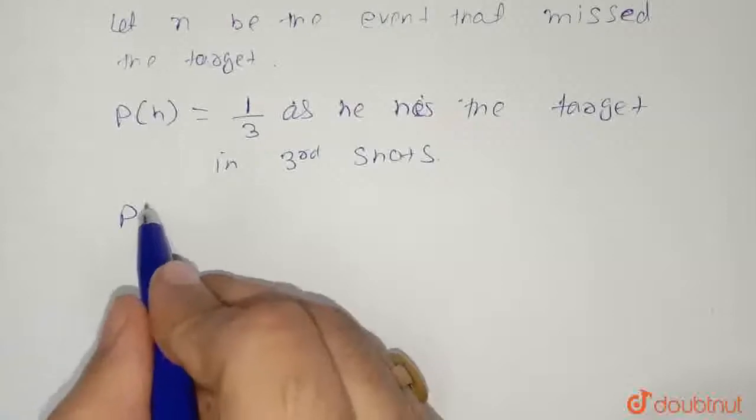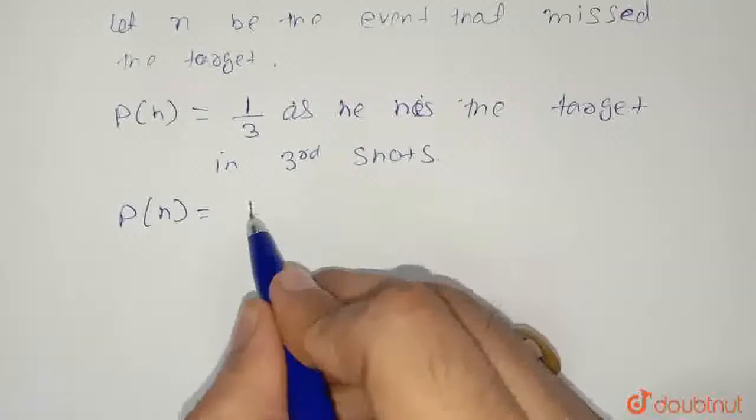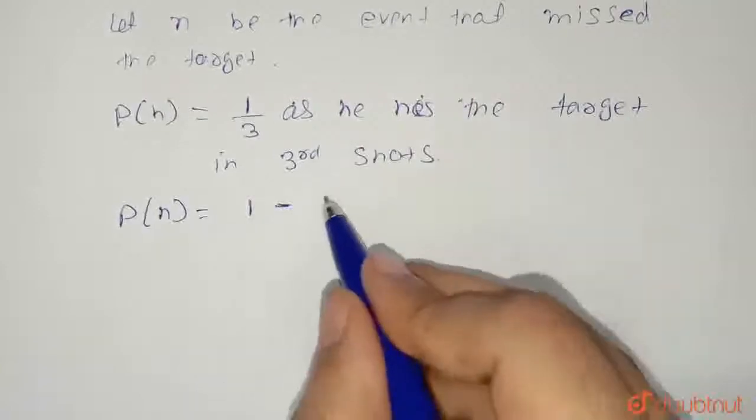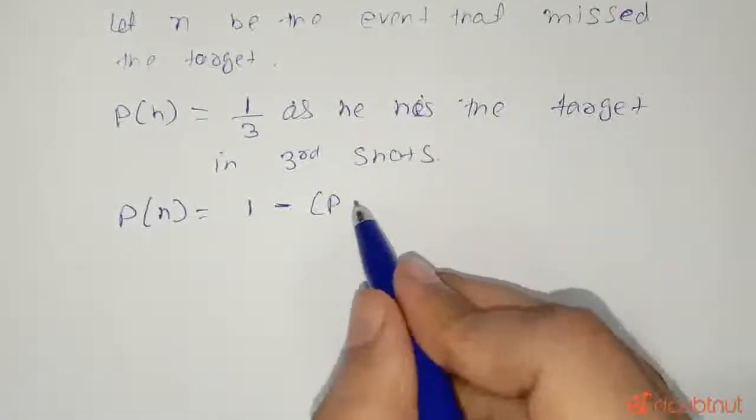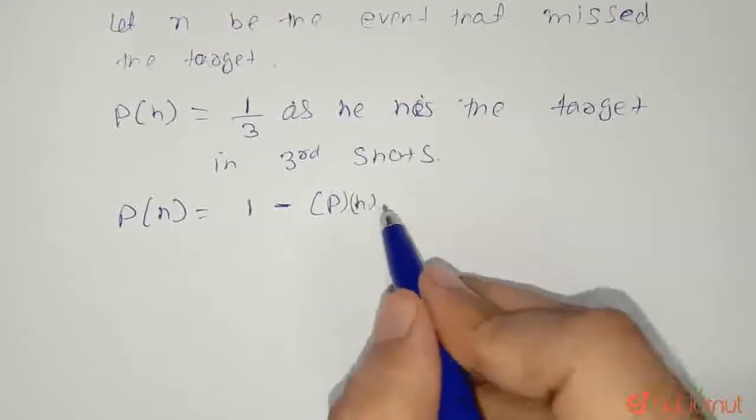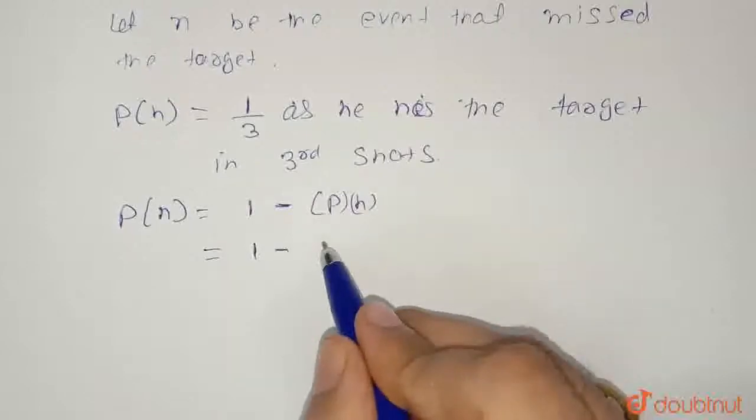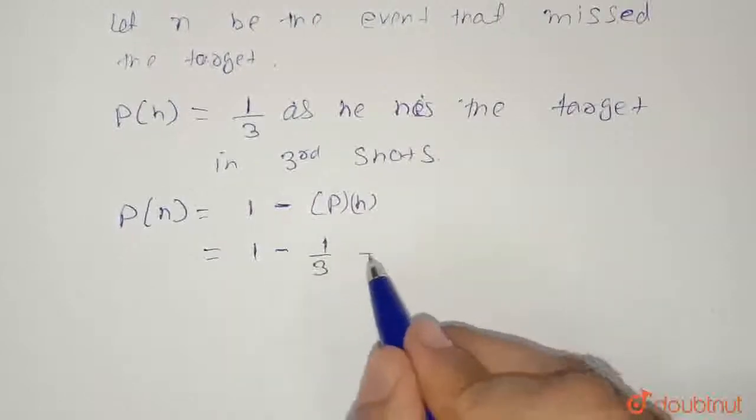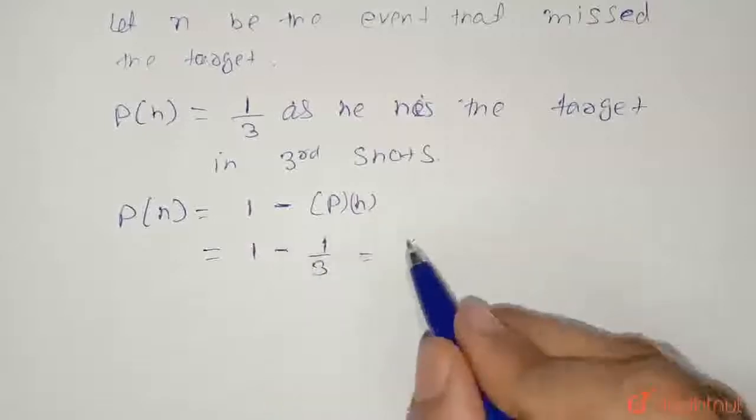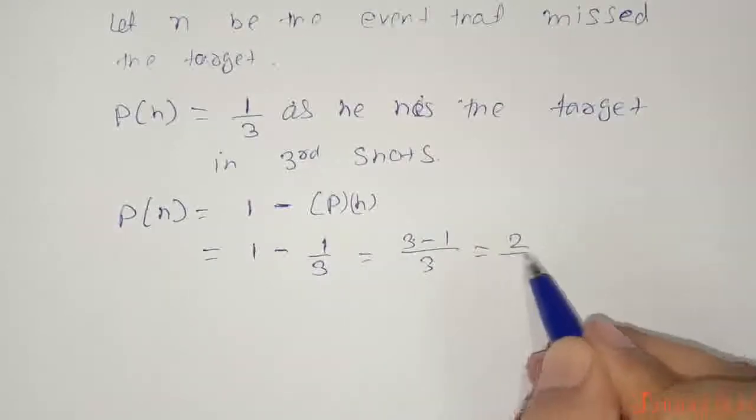Probability of event that missed the target is 1 minus probability of event that hits. 1 minus 1 upon 3, that is 3 minus 1 upon 3, is equal to 2 upon 3.